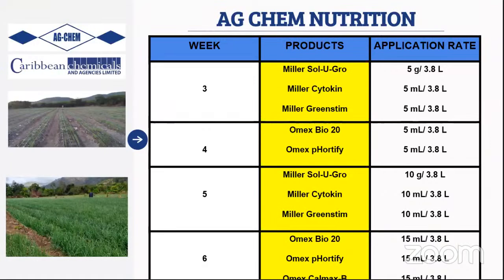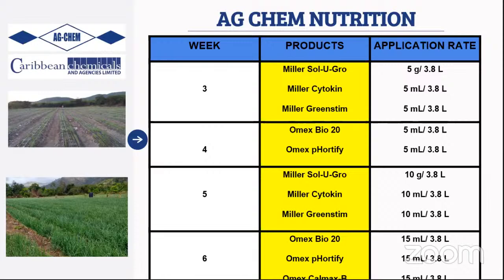At week four, Omex Bio 20 is applied — a biostimulant containing 28% seaweed kelp extract — which encourages quicker rooting and faster plant development without scorching new roots, unlike many standard 20-20 fertilizers. Micronutrients in the formulation support greater foliage development leading into the two-month growth phase. Omex Fortify is also included, as its phosphonate content binds with fungicides to translocate them faster throughout the plant, boosting plant immunity and nutrient movement.